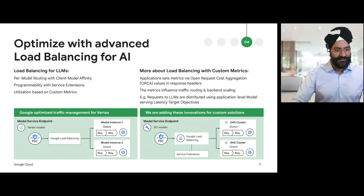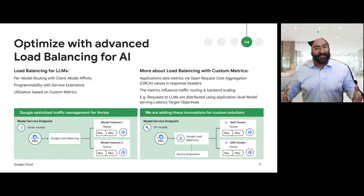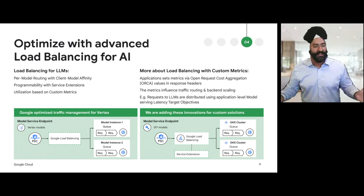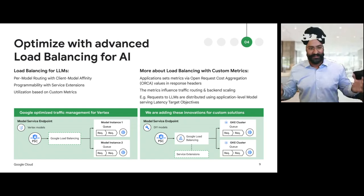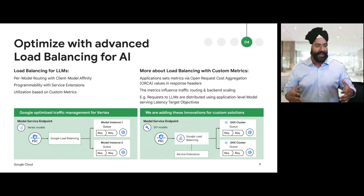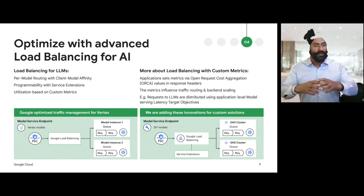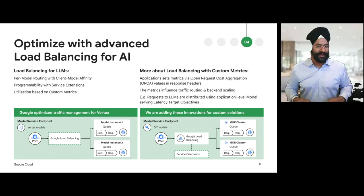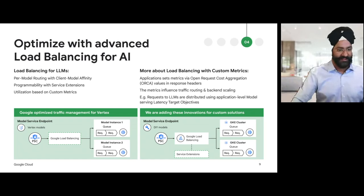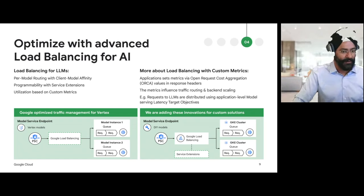In addition to this, we also introduced service extensions — a data plane integration where we can intercept and integrate third-party ecosystem providers. We can now add security, add application-based ecosystem providers which can provide value, do custom header manipulation, redirect traffic in a smarter manner, and apply security policies. You can see that reflected in the model service endpoint on this particular slide.